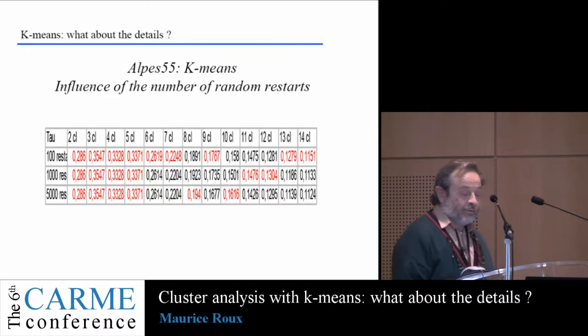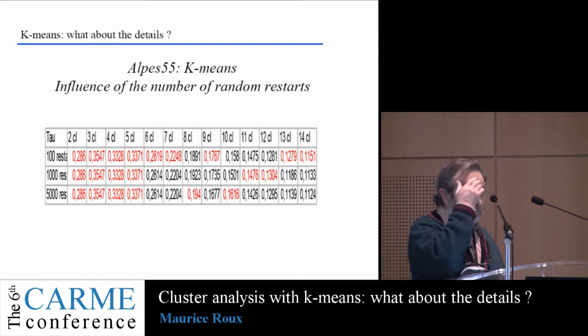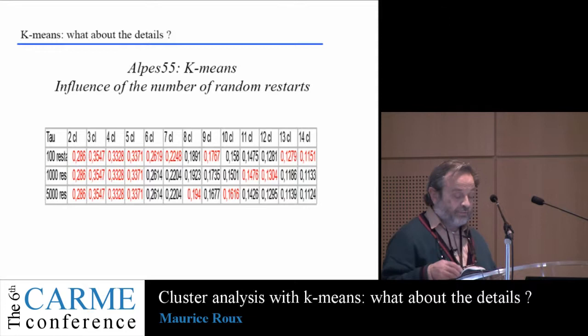Again, this is the comparison between 100 restarts, 1,000 restarts, and 5,000 restarts with the two coefficients. You can see that there is no agreement on the number beyond five clusters.